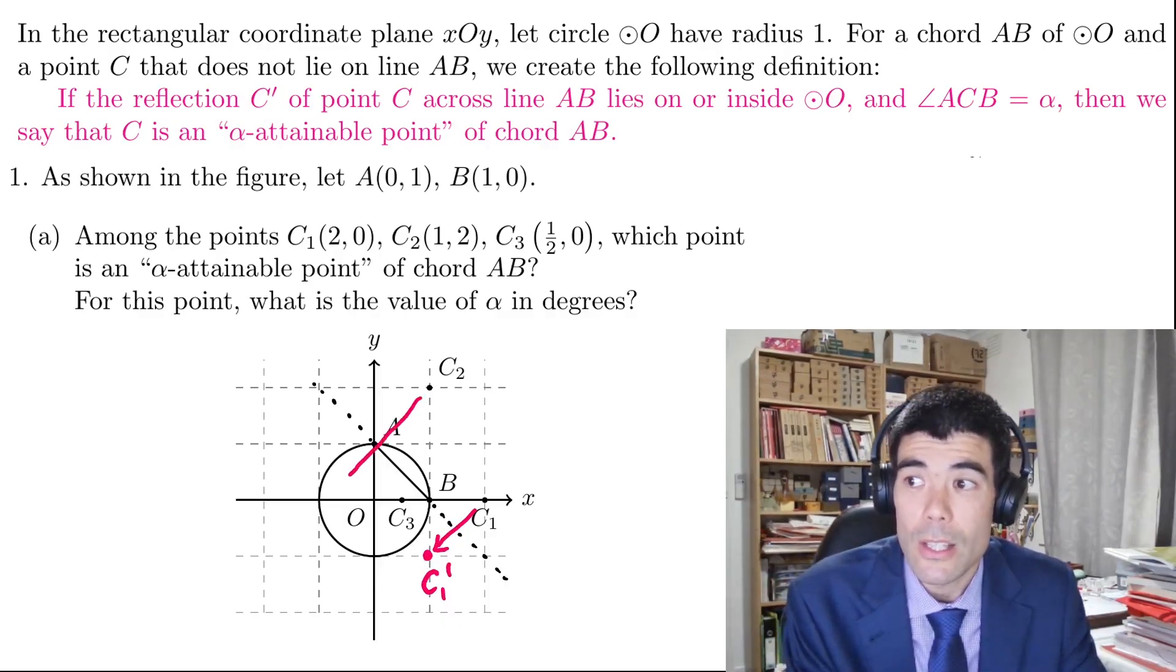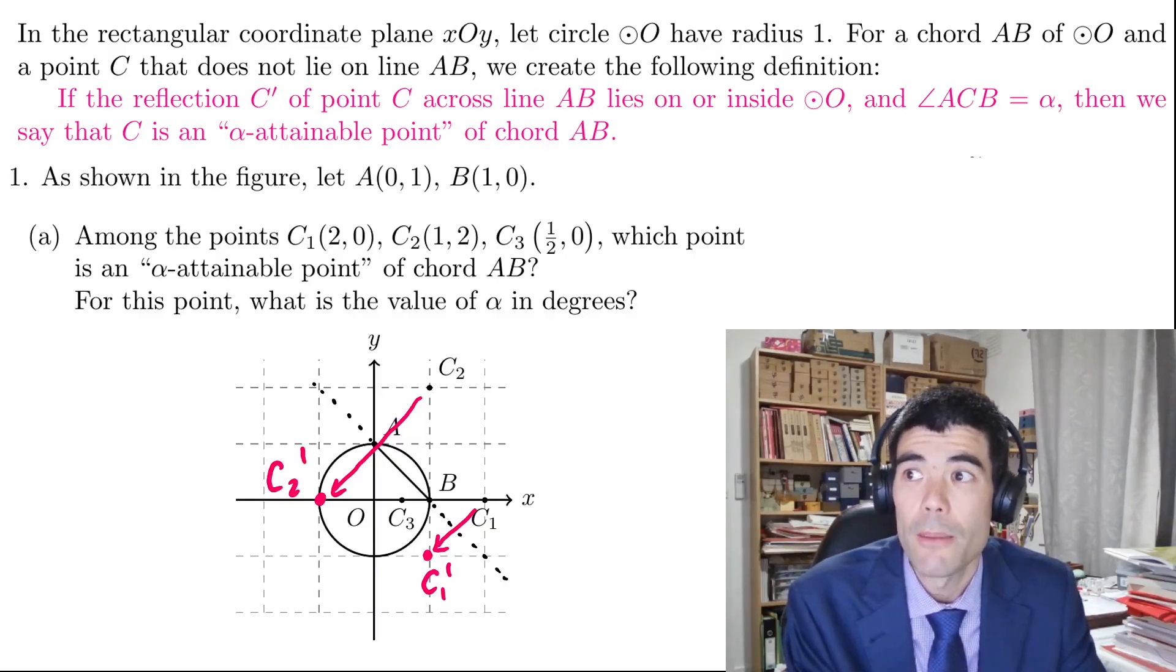But if we reflect C2, we'll get to this point negative 1, 0, it's just on the circle, so that's okay. So it is alpha attainable, we now just need to find the value of alpha.